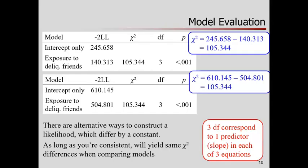Here is a model using the predictor exposure to delinquent friends. There are alternative ways to build the likelihood function, and those different ways differ by a simple constant transformation. So you might see one software produce one value for the likelihood and chi-square, and with the same data another software produce a different one. As long as you stick with the same software, it's fine. I have two different versions here — I think one is SPSS and one is R.